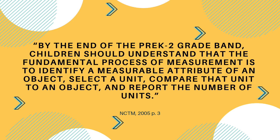Those attributes of an object are what we need kids to really focus on. The Pre-K to 2nd book says that by the end of the Pre-K to 2 grade band, students should understand that the fundamental process of measurement is to identify a measurable attribute of an object, select a unit, compare that unit to the object, and then report the number of units. That is found on page 3 of the Pre-K to 2nd grade book. So all it boils down to is: decide what attribute am I going to measure, what unit am I using, then take that unit and compare it to the object, and report back how many of those units it takes.